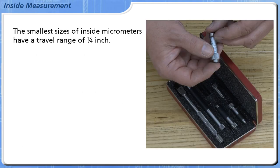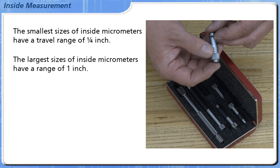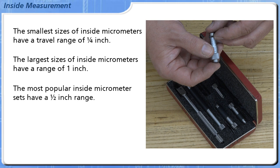The smallest sizes of inside micrometers have a travel range of one quarter inch. The largest sizes of inside micrometers have a range of one inch. The most popular inside micrometer sets have a half-inch range.